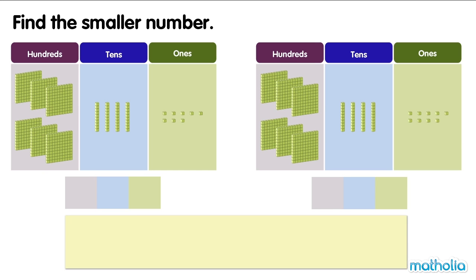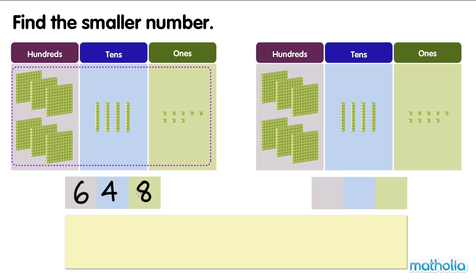Find the smaller number. In this set, there are six hundreds, four tens, and eight ones. There are six hundred and forty-eight blocks.